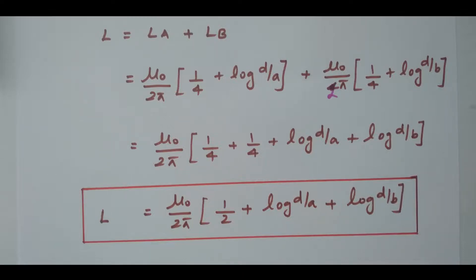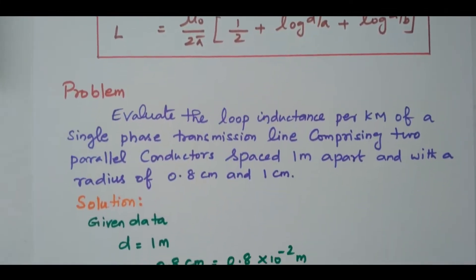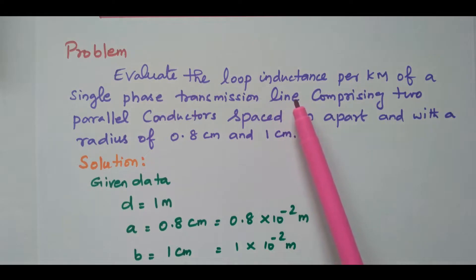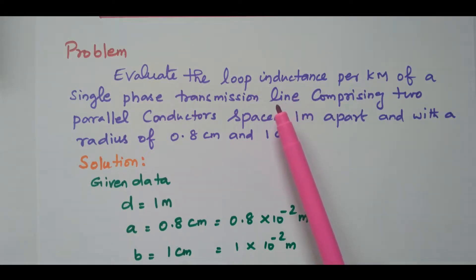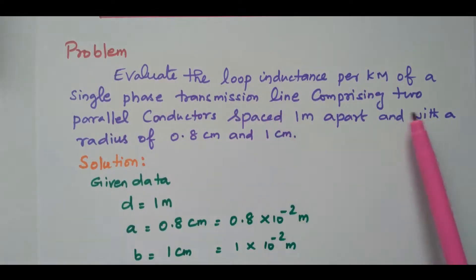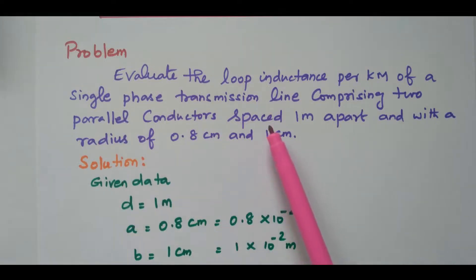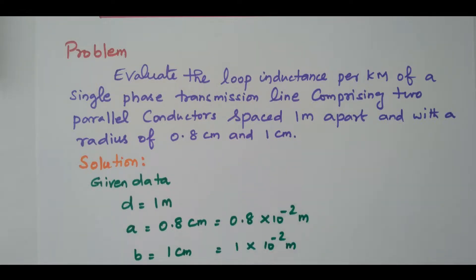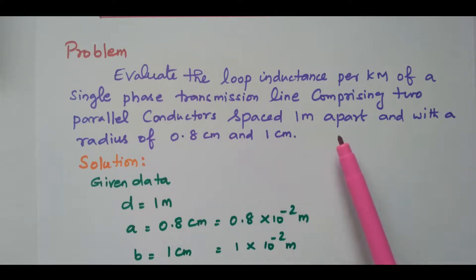Now based on this we will solve one problem. Evaluate the loop inductance per kilometer of a single-phase transmission line comprising two parallel conductors spaced one meter apart. The radius of the two conductors is 0.8 centimeter and 1 centimeter respectively.